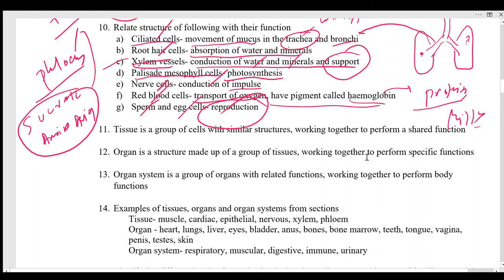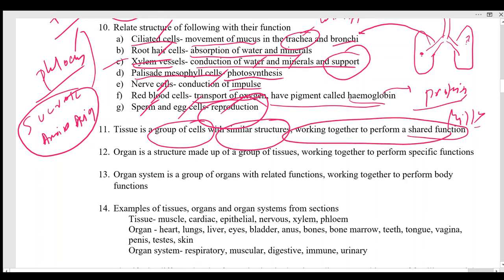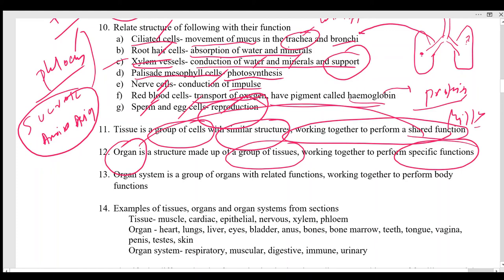The definitions are very important for examination questions. A tissue is a group of cells with a similar structure working together for a shared function. An organ is a group of tissues — generally dissimilar tissues — that together perform a specific function, like the stomach digesting food. An organ system is a group of organs with related functions working together to perform a function required by the body.